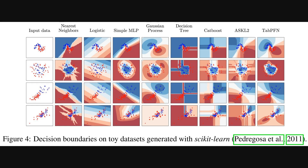We've talked about how Tab PFN is trained on synthetic data generated from those priors like BNNs and SCMs. Figure four gives us a visual sense of what that training actually results in. It shows the decision boundaries that Tab PFN draws on some simple toy datasets, compared to other common methods like nearest neighbors, decision trees, CatBoost, and even an AutoML system. You can see Tab PFN's boundaries tend to be pretty smooth and intuitive, which the paper suggests comes from those inductive biases it learned during its offline training.